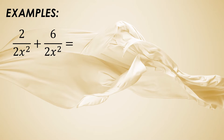Let's have this given example: 2 over 2x squared plus 6 over 2x squared is equal to? As you can see, we have the same denominator which is 2x squared. So we will just add the two numerators, which are 2 and 6, and then copy the denominator. So the answer is 8 over 2x squared.